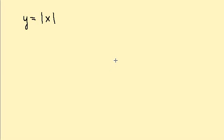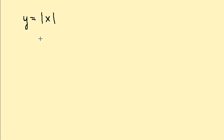This is the first video on graphing absolute value functions. The whole key to graphing absolute value functions is making sure that you choose enough points and the correct points. It's kind of like graphing a linear equation — we're going to pick some values for X, get our Y values, and plot the points.